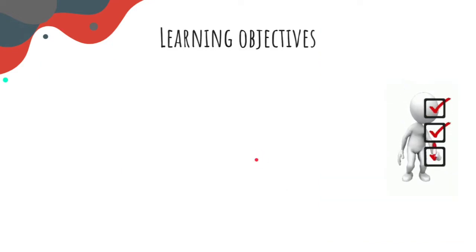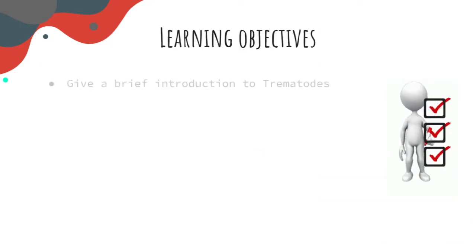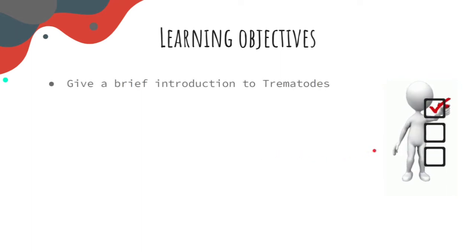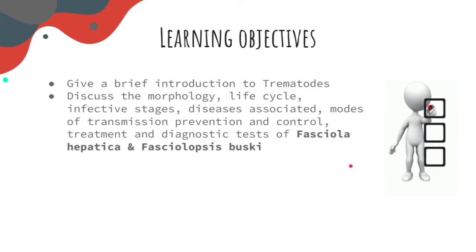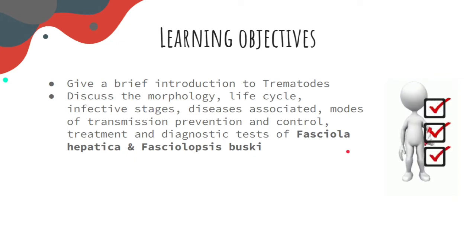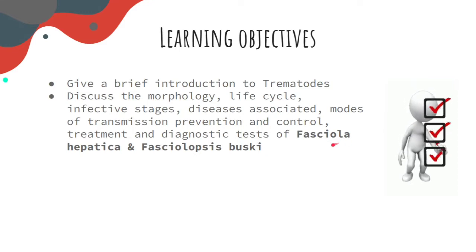Here are our learning objectives for today. First is to give a brief introduction to our Trematodes. Second is to discuss the morphology, life cycle, diagnostic and infective stages, disease associated, modes of transmission, prevention and control, treatment, and diagnostic tests of the Trematodes — specifically the fasciola and fasciolopsis.